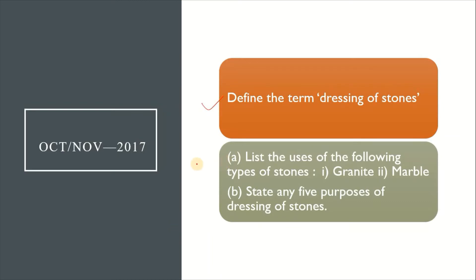The next question is the essay question, with A and B bits. Part A lists the uses of granite and marble — granite uses are worth 2 marks and marble uses are worth 2 marks. Part B states 5 purposes of dressing of stones, worth 5 marks. The marks are bifurcated accordingly.